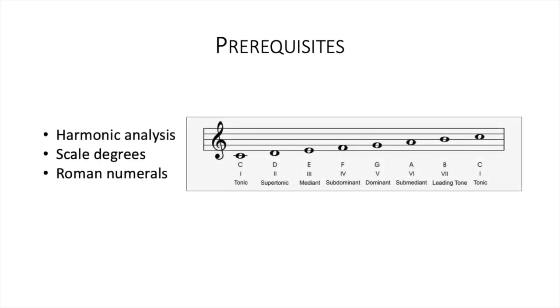Let's see how this process of reduction works. There are a few things you'll need to know if you want to do this. The most important are to have a basic understanding of harmonic analysis, scale degrees and Roman numerals. A basic understanding of figured bass is also needed. If you're not quite at this level yet, there is a video on this channel giving a crash course introduction to them. Of course, it goes without saying that you'll need to be able to read music. If you understand these basic principles, then you have everything you need to get started in Schenkerian Analysis.